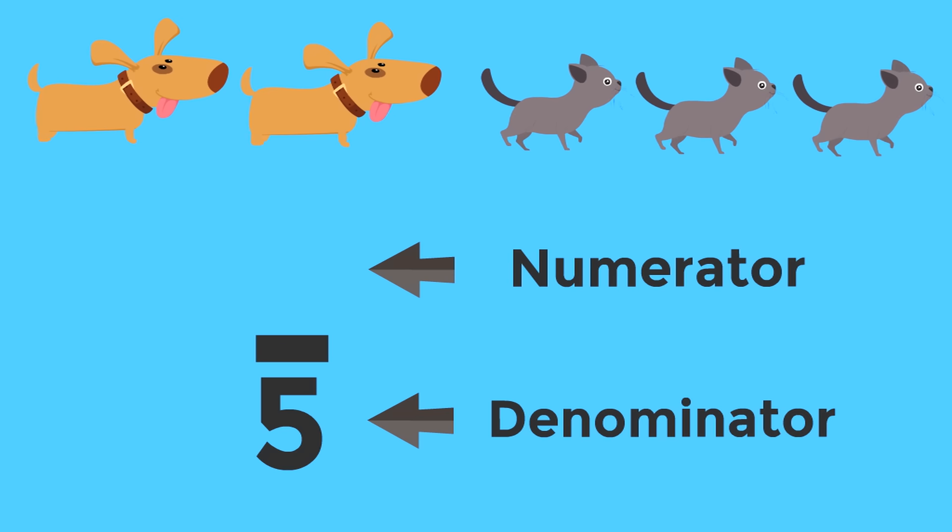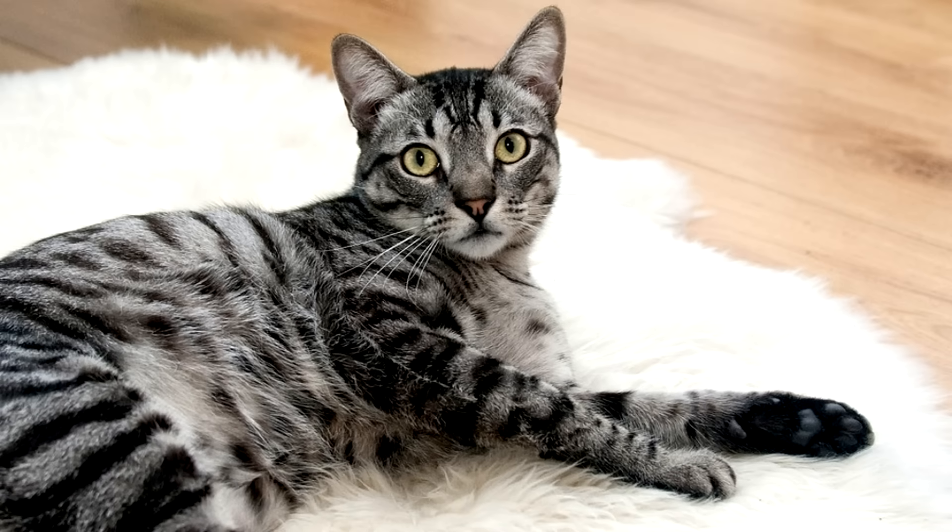Remember, we're asking for the fraction of the pets that are cats. How many cats? How many cats are there? Yeah, three. So, what's the numerator? Yeah, three. Three is the numerator. Three-fifths of the pets are cats. Wow, that was so cool. But none of those cats are as special to me as you, Mr. Whiskers. Not even a fraction of my heart belongs to you. My whole heart. I love you, Mr. Whiskers.